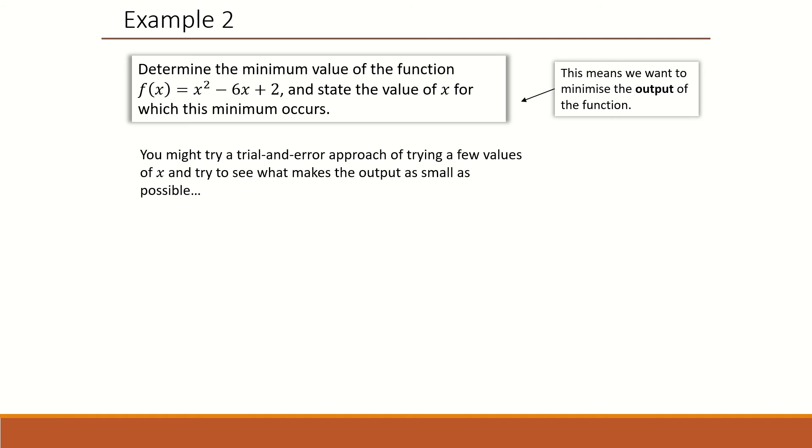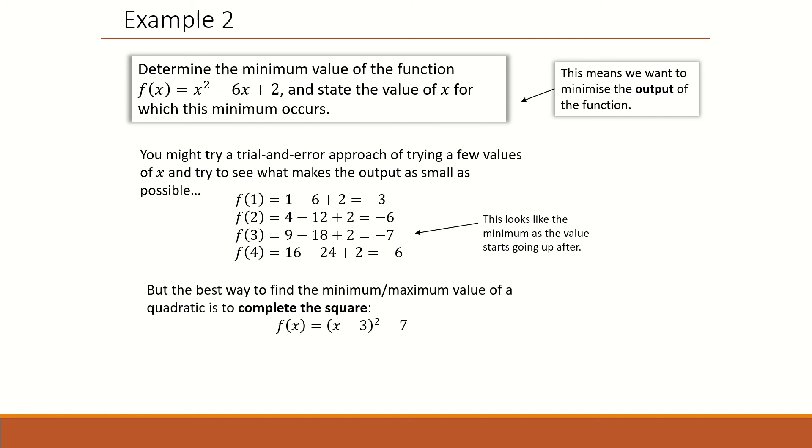So firstly, you may have done a trial and error approach of trying a few values of x. And you should have got an answer of 3 where x equals 3 and that's where the minimum occurs. However, the best way to find a minimum or maximum value of a quadratic is to complete the square, which should have given you x minus 3 squared minus 7.